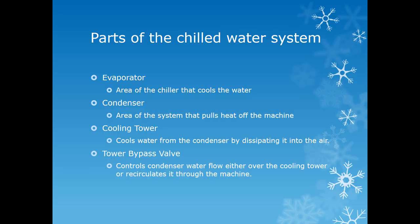The cooling tower is part of the condenser side which actually removes the heat from the condenser water loop. The tower bypass valve is used to regulate the temperature of the condenser water. If the condenser water gets too cold or too hot, the machine can have problems. It must be maintained within a set point of design by the manufacturer of the chiller.